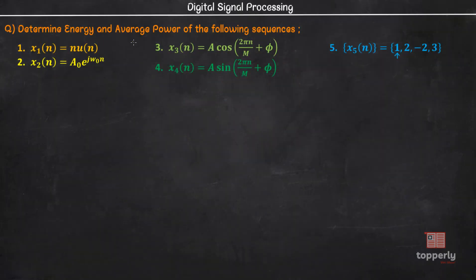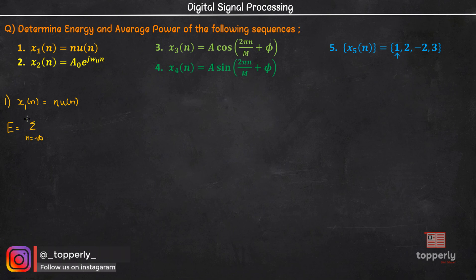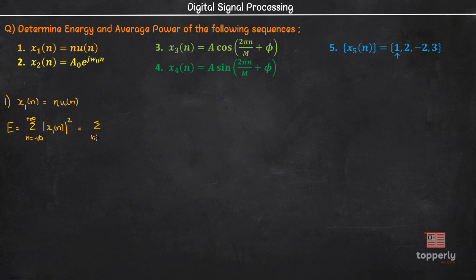The question is to determine energy and average power of the following sequences. The first subsection is x1(n) = n·u(n). The energy of this sequence is given by E = Σ(n = -∞ to +∞) |x1(n)|² = Σ(n = 0 to ∞) |n·u(n)|².